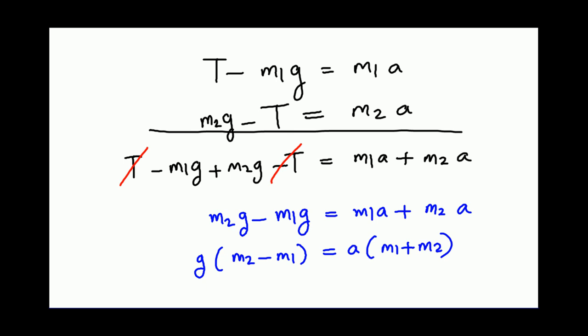Start a new page. We have g times M2 minus M1 equals a times M1 plus M2. So we are asked for a, so what do we get? Divide both sides by M1 plus M2. So you get g times M2 minus M1 over M1 plus M2.